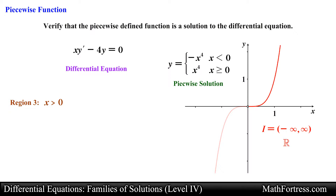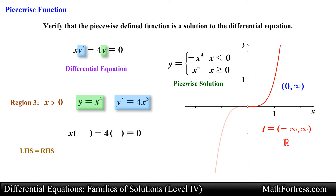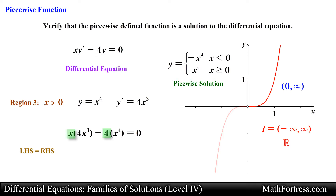Lastly we need to make sure that this piecewise function is a solution to the ODE from 0 exclusive to positive infinity, in other words when x is greater than 0. In this interval the piecewise function is defined by the function x raised to the power of 4. We find the derivative by applying the power rule. Having found the derivative, we substitute it along with x to the 4th into the differential equation, then distribute the variable x and the constant negative 4, and collect like terms. This results in 0 equals 0.